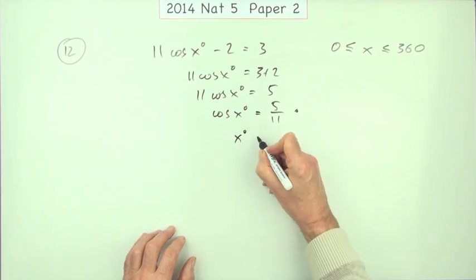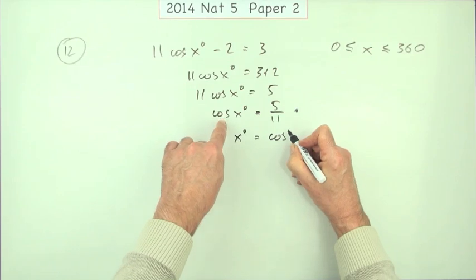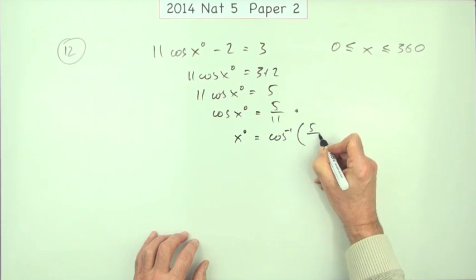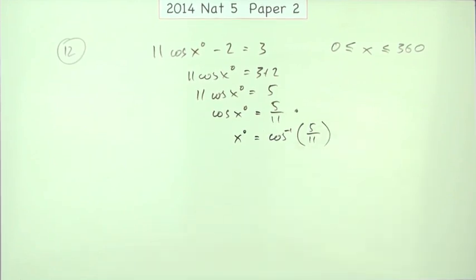How do you get x itself? Well we'll have to get rid of the cos. So that's inverse of cos. So inverse cos of 5/11. That's not worth a mark. It's not worth a mark until you get your first answer. So it all depends how you do it.